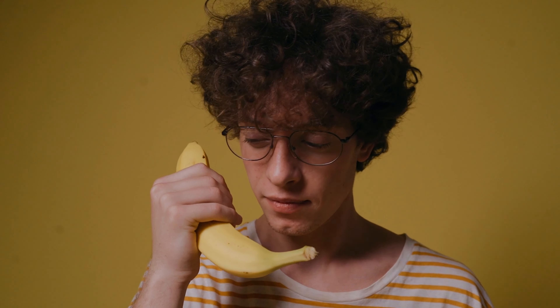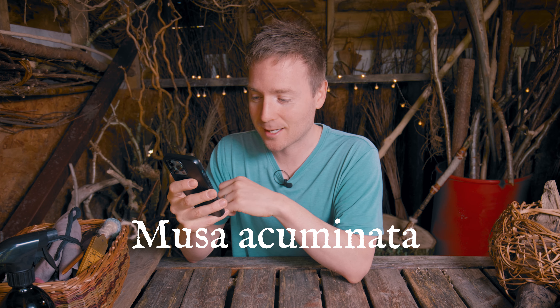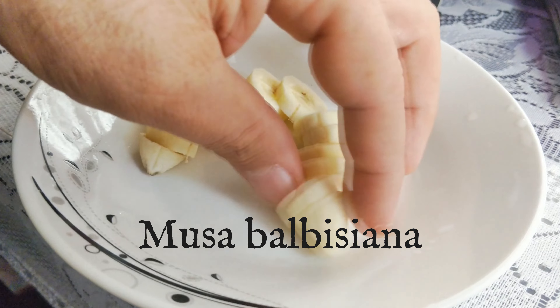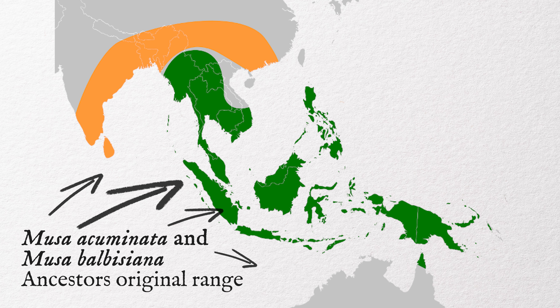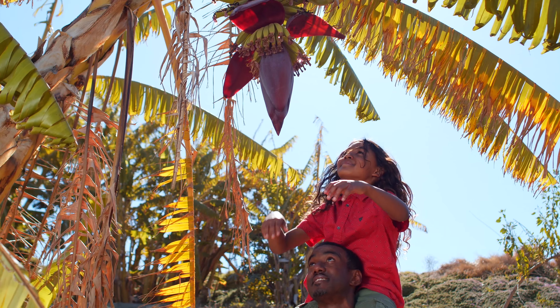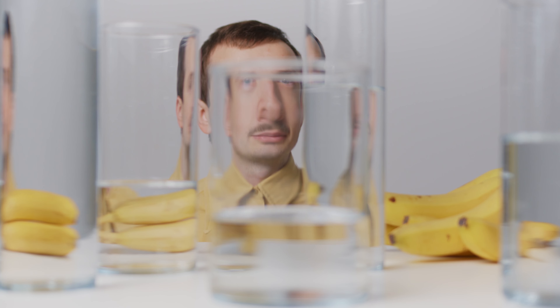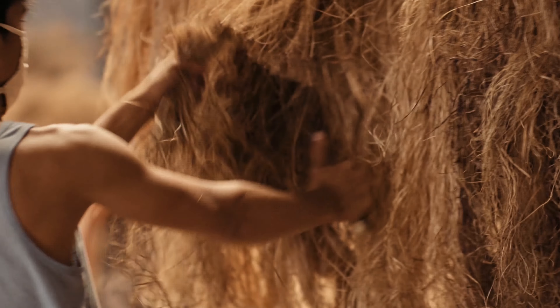Almost all modern edible seedless cultivated bananas come from two wild species — Musa acuminata and Musa balbisiana, or hybrids of them. Musa species are native to tropical Indo-Malaya and Australia and were probably domesticated in New Guinea. They are grown in 135 countries around the world. The largest producers of bananas in 2022 were India and China, which together accounted for approximately 26% of total production. Bananas are used primarily for their fruit but can also be used to make paper or textiles created from the plant bark or the banana peel fibres.